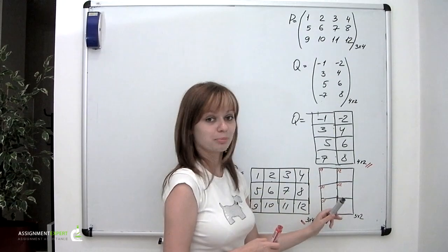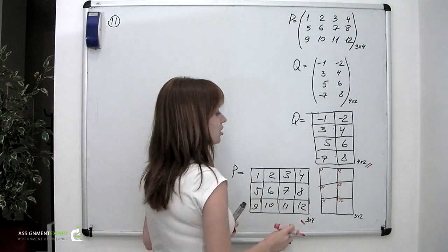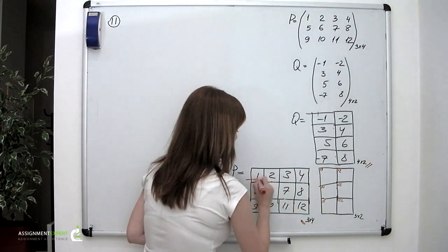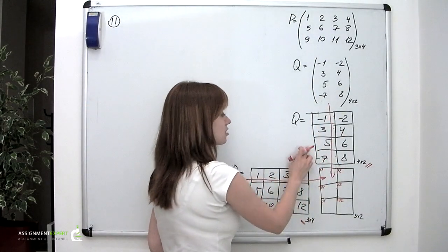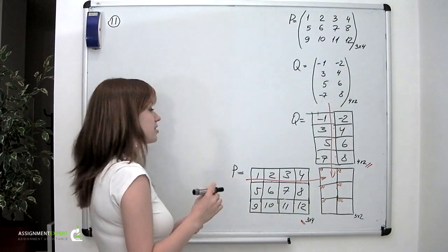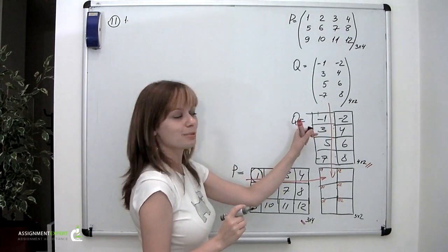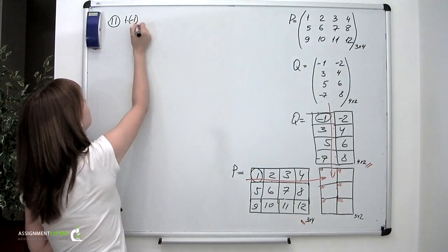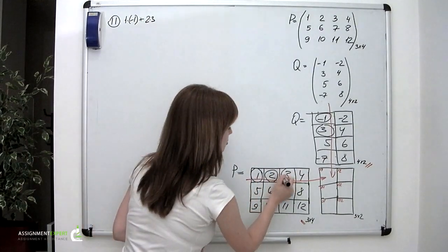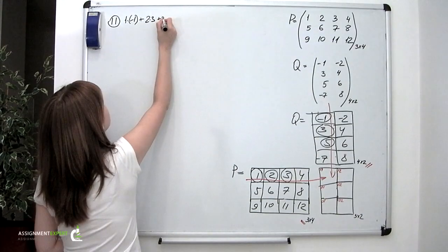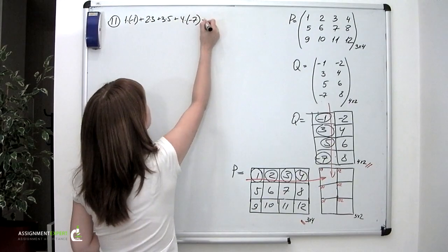Now let us calculate these elements one by one. First, we calculate element (1,1). We find the first row of P and the first column of Q, then multiply corresponding elements and sum them: 1 times minus 1, plus 2 times 3, plus 3 times 5, plus 4 times minus 7, which equals minus 8.